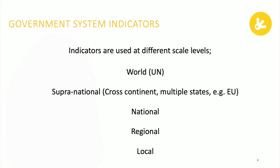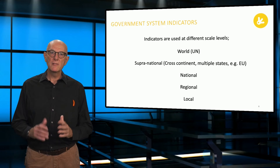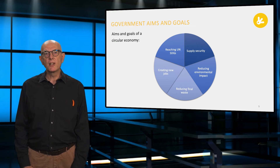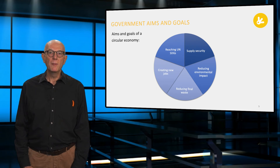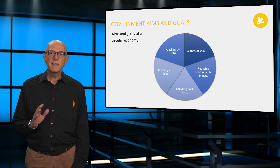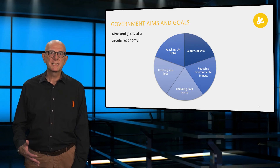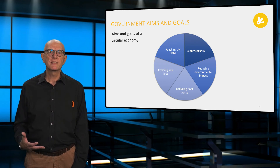Governmental indicators can be set based on geographical dimensions. The biggest is global and the local could be a district in a city. The aims and goals of a circular economy for the government can include supply security of materials, and there one might see lists of critical materials. Very important is reducing environmental impacts via country-level footprints — measuring CO2, land use and water, for example.